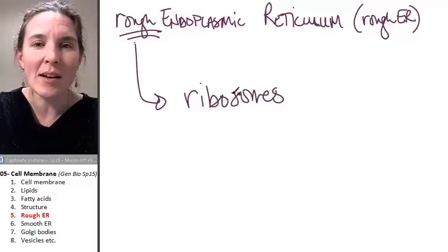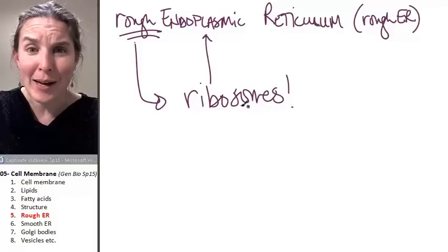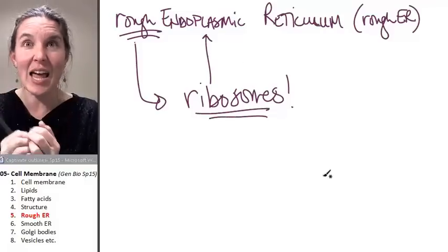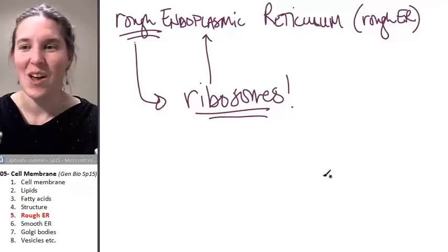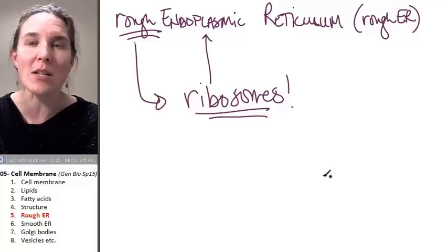The rough endoplasmic reticulum is a maze of cell membrane with ribosomes embedded in it, like a jeweled outfit with a whole bunch of jewels all embedded in it, and the jewels are the ribosomes.